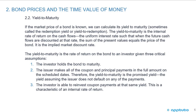The yield to maturity is the implied market discount rate and the rate of return on the bond to an investor, given three critical assumptions: (1) the investor holds the bond to maturity; (2) the issuer makes all coupon and principal payments in full on the scheduled dates — this is the promised yield, assuming no default; and (3) the investor is able to reinvest coupon payments at that same yield, which is a characteristic of an internal rate of return.